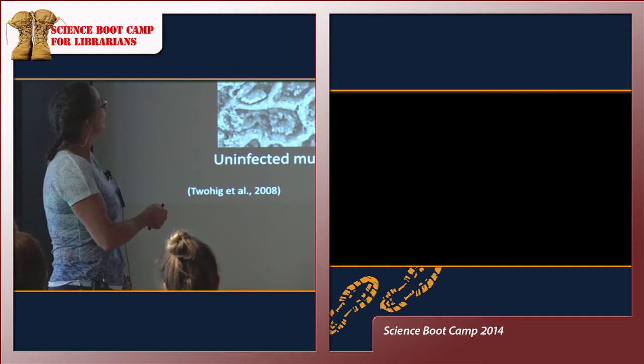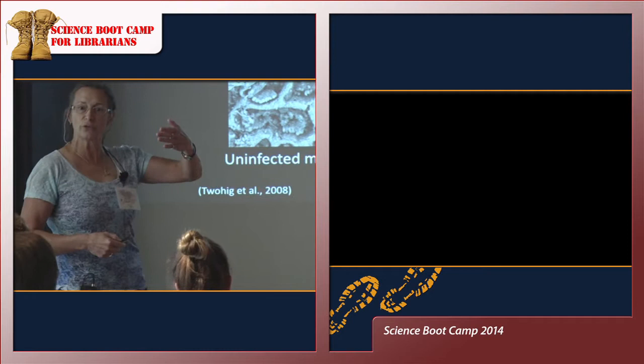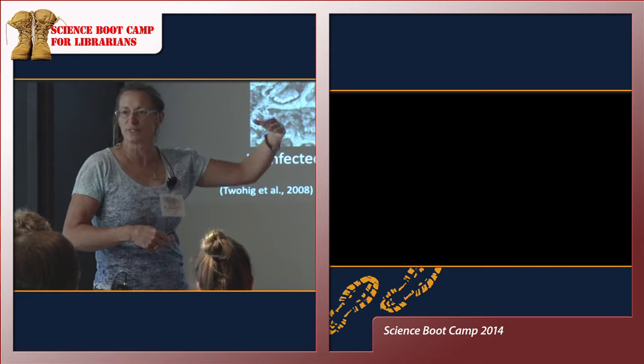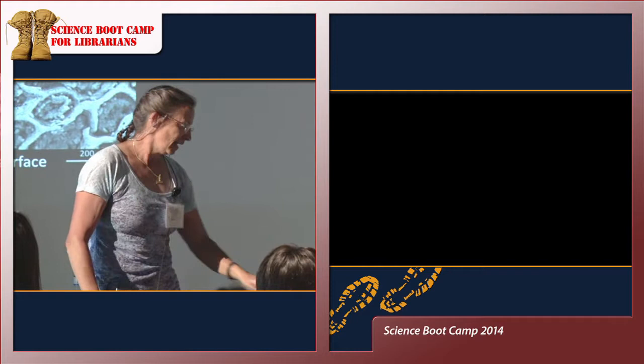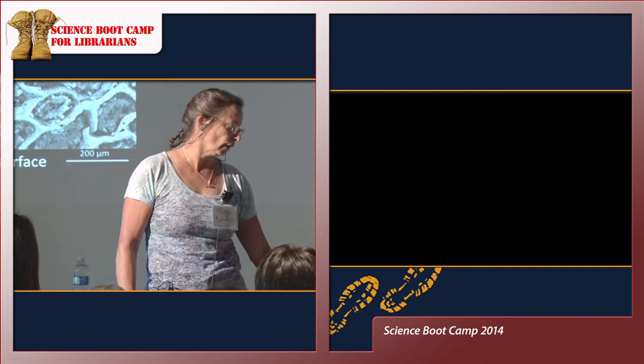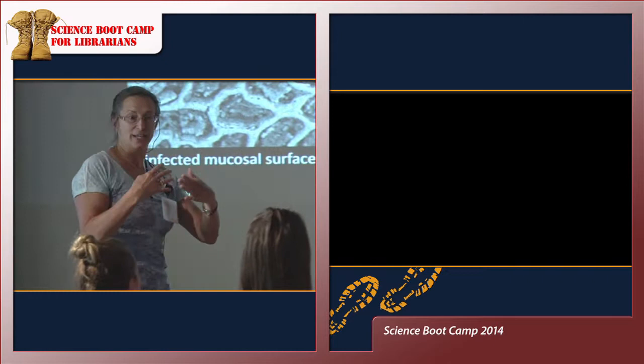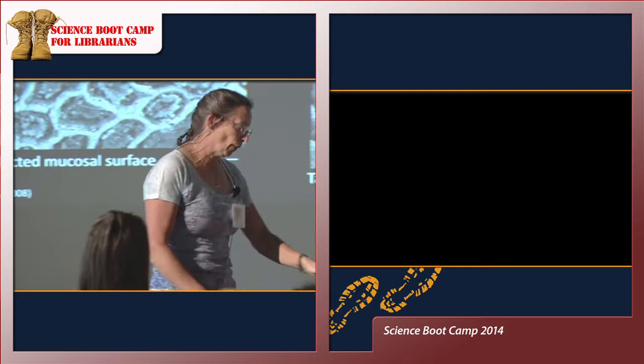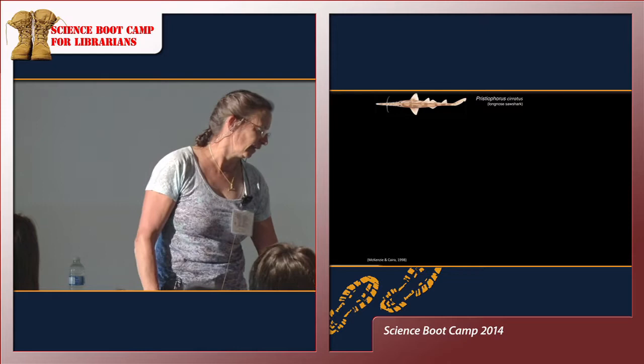Now let me show you that interface in a different species using a different method. Let's look at the spiral intestine of the little dwarf whip ray, Himantura walga. I'm showing you an uninfected mucosal surface viewed with scanning electron microscopy. This species has almost the same surface as the nurse shark, but now you're getting to see it in three dimensions. Now I'm going to show you a similar tapeworm attached to that surface — there it is. You've seen it both as a section and from the standpoint of scanning electron microscopy.